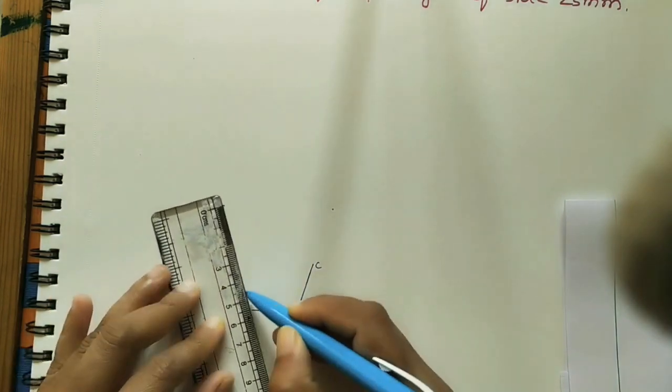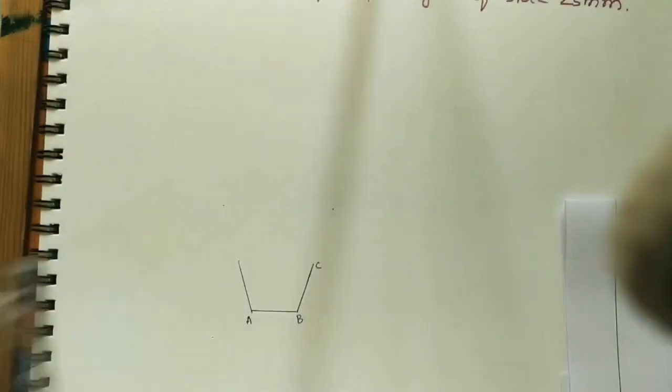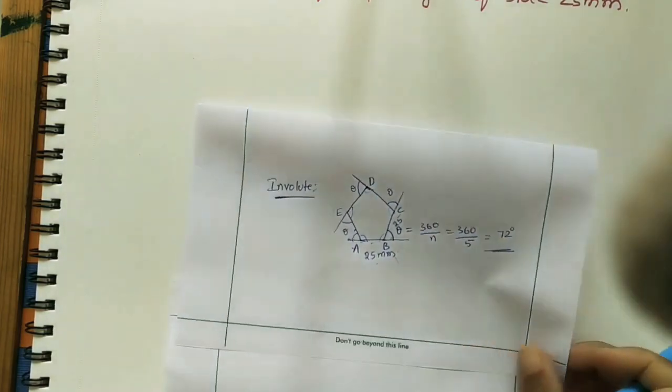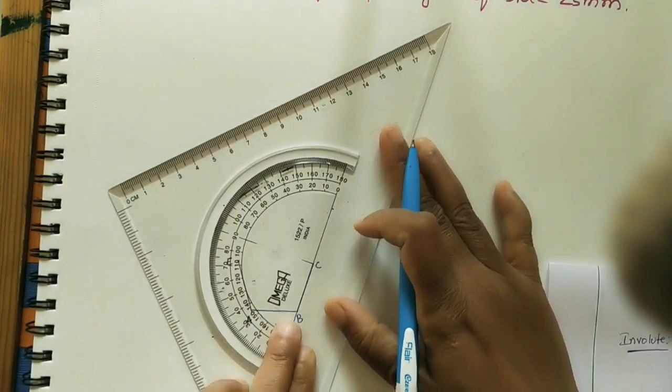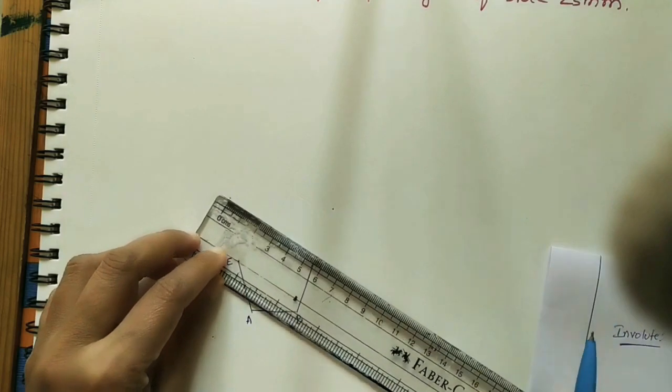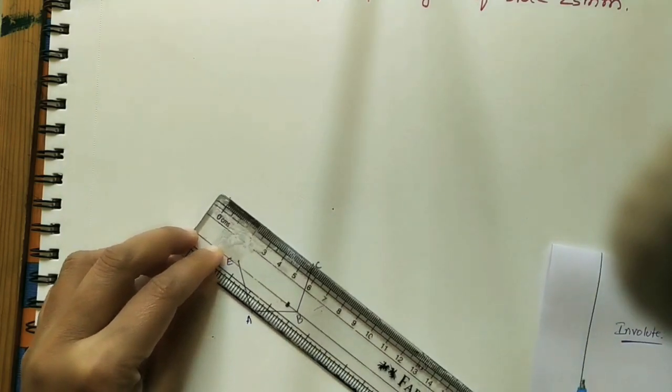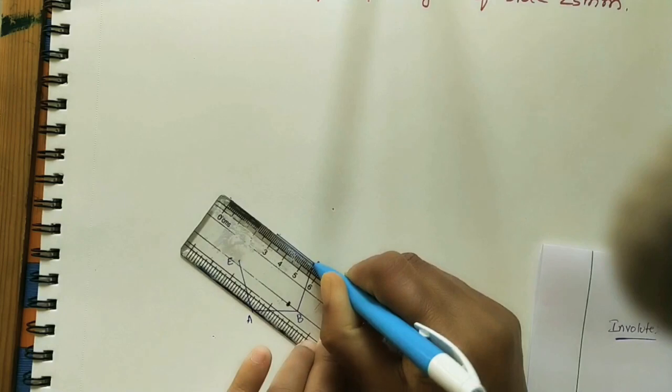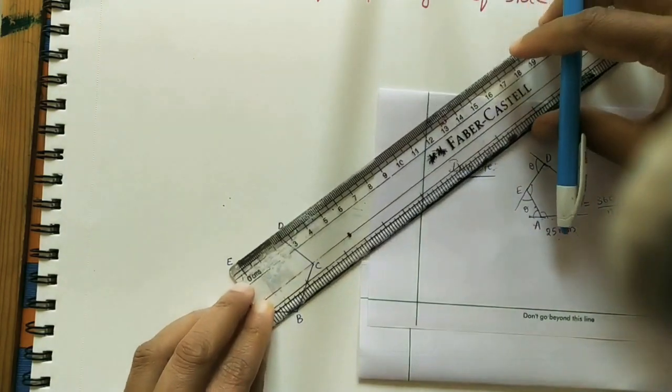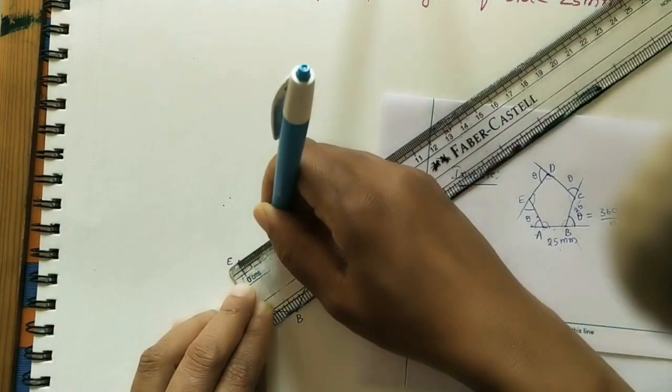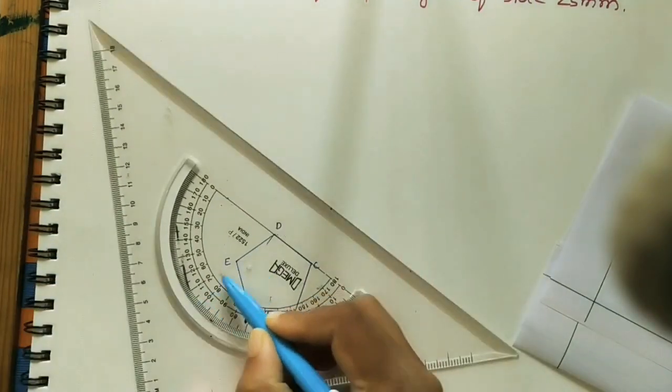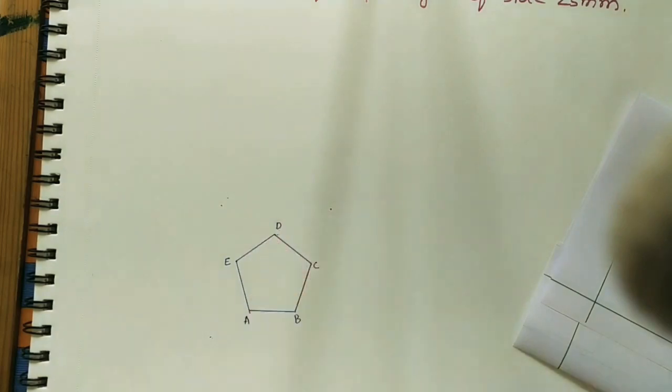Take 25. And after that, we will do this. Mark the end that is E here. Take outer angle 72. Take 72 at C. Do line in this direction of 25mm. Mark the end point D. If we measure ED it should be 2.5cm. Now it is 2.5cm. And we can check the angle also whether it is 72 or not. By using the protractor we are getting 72. So whatever pentagon we did it is correct.